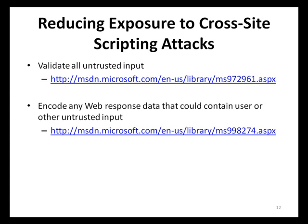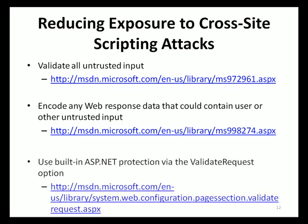The second defensive measure is to encode any web response data that may contain user input or other untrusted input. Encoding in the context of cross-site scripting attacks works by taking data that may contain executable code or script and transforming or neutralizing it into non-executable forms. Web-based applications built using Microsoft ASP.NET can leverage built-in protection via the Validate Request option. When set to True, this instructs ASP.NET to inspect all inputs for potentially dangerous inputs. If any potentially dangerous inputs are detected, an HTTP request validation exception is thrown and the attack is halted. It is important to note that this feature provides only limited protection and should be used in conjunction with safe development practices such as input validation and output encoding.